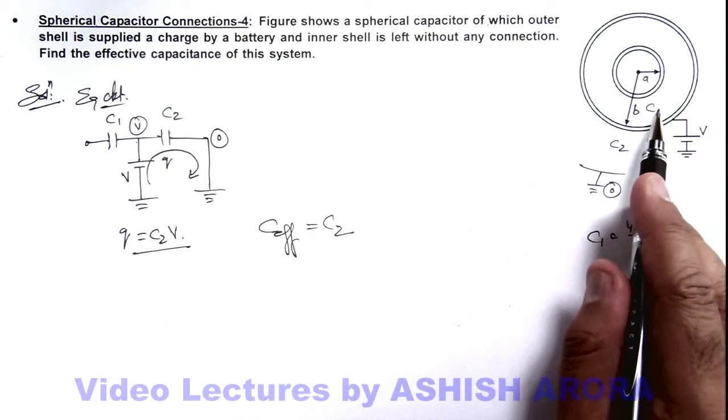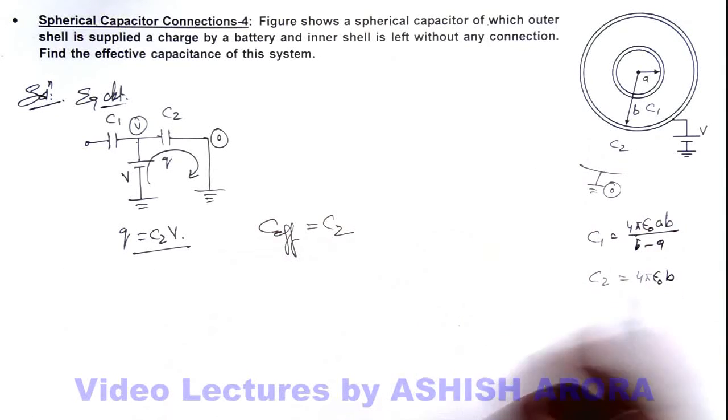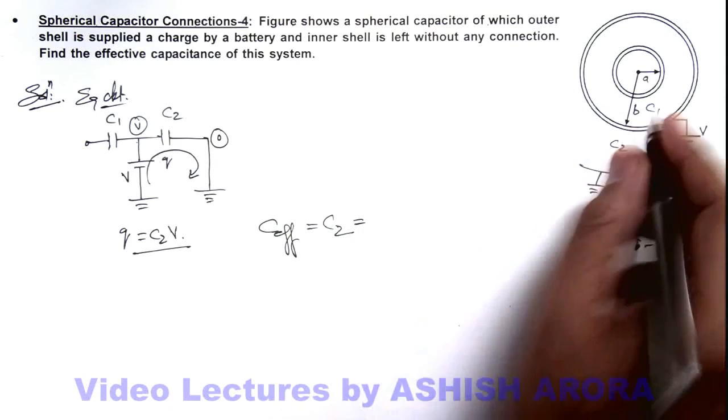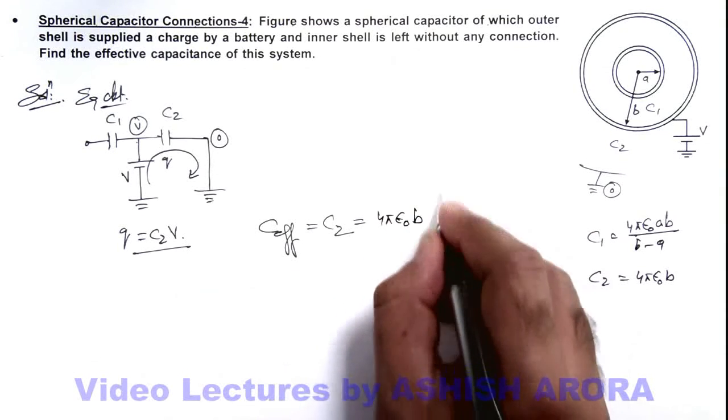But here we can see that C1 will be left uncharged because one plate of C1 is not connected anywhere. So only the capacitance which is useful here is 4πε₀b. That is the answer to this problem.